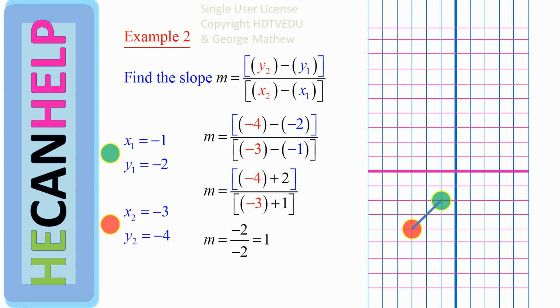So that's what I did here. You plotted x1, y1 in green and x2, y2 in red. Slope is y2 minus y1 divided by x2 minus x1. What is negative 4 minus negative 2? It is negative 4 plus 2. And negative 3 minus negative 1 is negative 3 plus 1. Negative 4 plus 2 is negative 2, negative 3 plus 1 is negative 2. So negative 2 divided by negative 2 is 1.